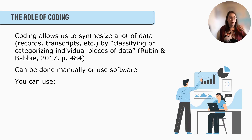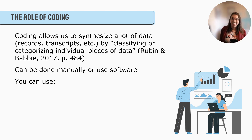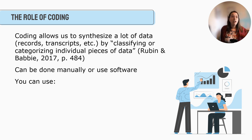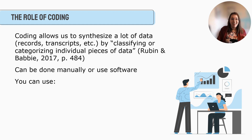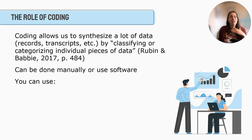One thing we talk a lot about with qualitative research is the use of coding. Coding is a really great tool that allows us to synthesize a lot of data, whether that's records or transcripts, by classifying or categorizing individual pieces of data. Coding can be done manually — for example, you would print out all the transcripts, highlight them in different colors, cut them out, and put all the different colored sections together — or you can use software, which is what a lot of researchers do.